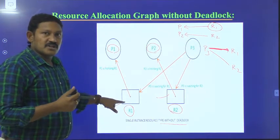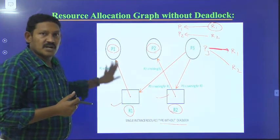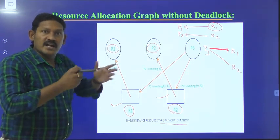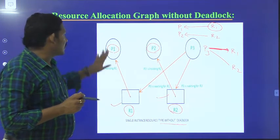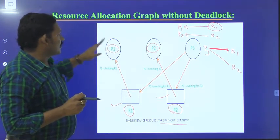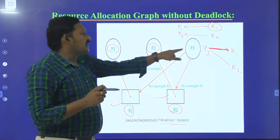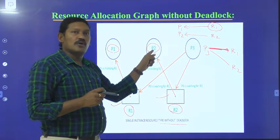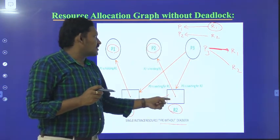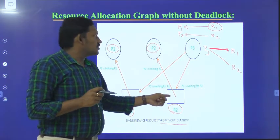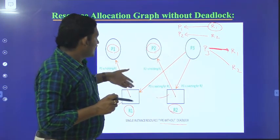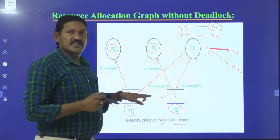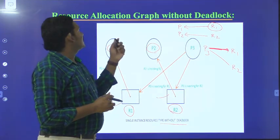P1 used R1 and after completion of its execution, P1 will release R1 because P1 is not waiting for anything — it is just holding, no hold-and-wait. After completion, P1 releases R1, which can then be allocated to process P3. Similarly, P2 holds R2 with no waiting, so after accessing R2, P2 releases it, and R2 can be utilized by P3. P3 is waiting for these two resources, and when they get released, P3 holds them and after finishing releases them too.